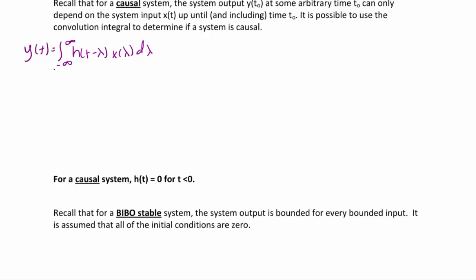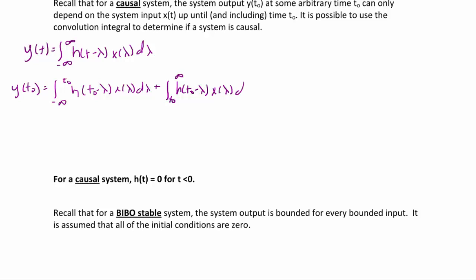We're going to split this into two integrals to find y(t₀). y(t₀) equals the integral from negative infinity to t₀ of h(t₀ minus lambda) times x(lambda) d-lambda, plus the integral from t₀ to infinity of h(t₀ minus lambda) times x(lambda) d-lambda.